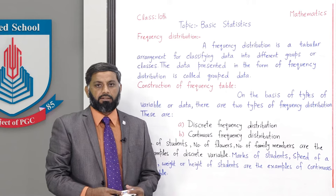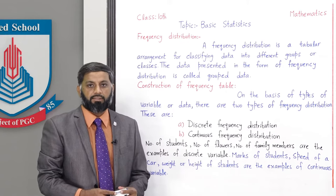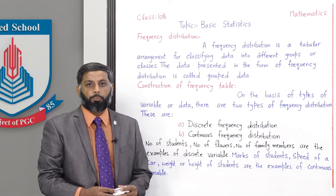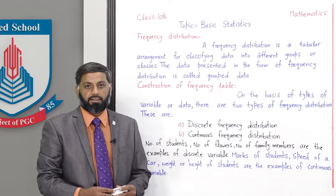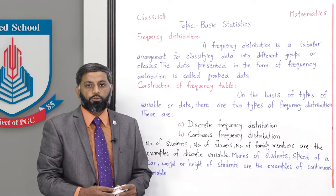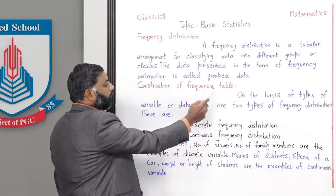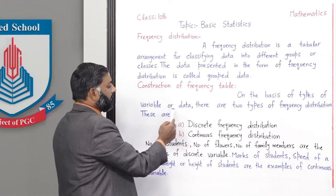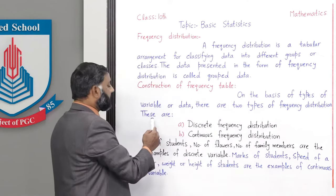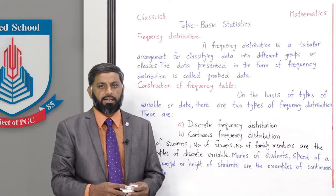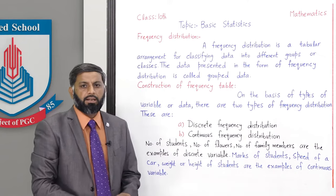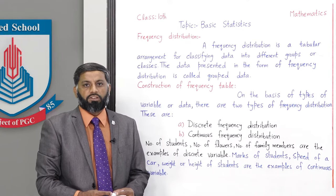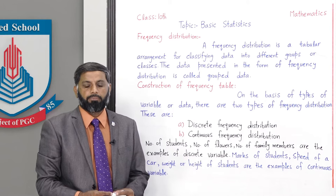ابھی ہم نے discuss کیا کہ collection of data is statistics اور جو data ہم collect کرتے ہیں وہ ungroup data کہلاتا ہے۔ جب ہم اسے classes یا groups میں convert کر کے tabular arrangement کر لیتے ہیں تو وہ group data بن جاتا ہے۔ Construction of frequency table on the basis of types of variable — there are two types of frequency distribution: discrete frequency distribution اور continuous frequency distribution۔